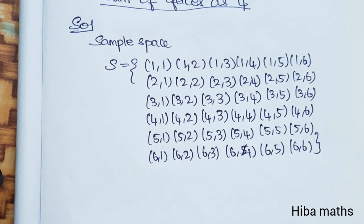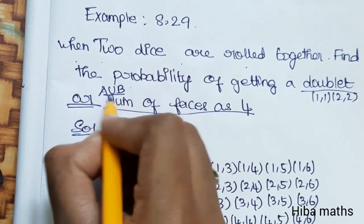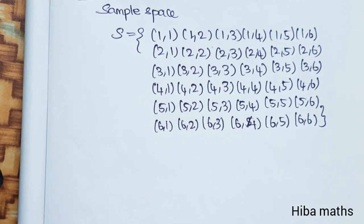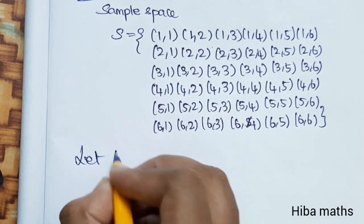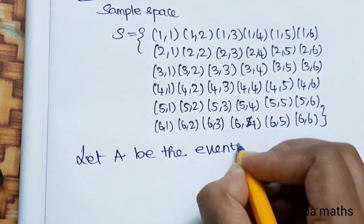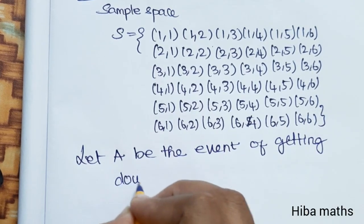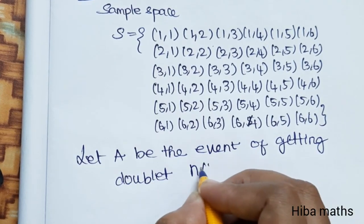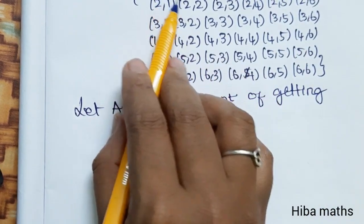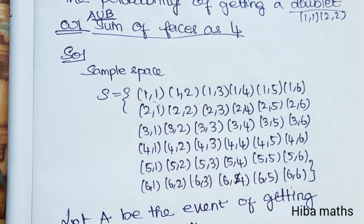We will find A union B. Let A be the event of getting doublet. So A should be 1,1 - this line will be crossed. The doublets are 1,1, 2,2, 3,3, 4,4, 5,5, 6,6.